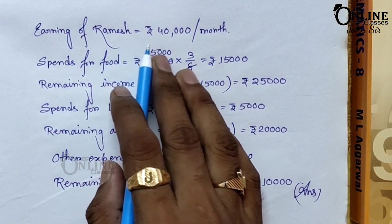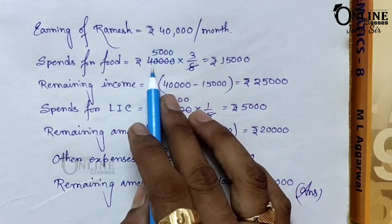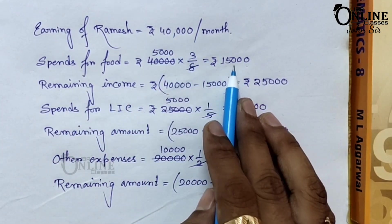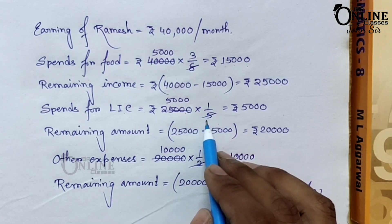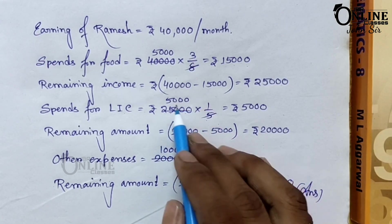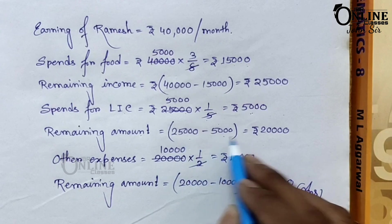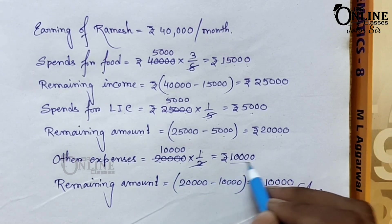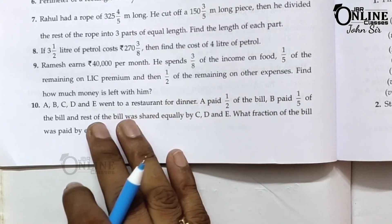Ramesh earns 40,000 per month. Spends on food: 40,000 multiplied by 3/8 equals 15,000. Remaining: 40,000 minus 15,000 equals 25,000. Spends on LIC: 25,000 multiplied by 1/5 equals 5,000. Remaining: 25,000 minus 5,000 equals 20,000. Other expenses: 20,000 multiplied by 1/2 equals 10,000. Final remaining amount: 20,000 minus 10,000 equals 10,000.